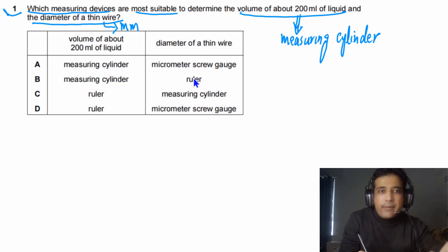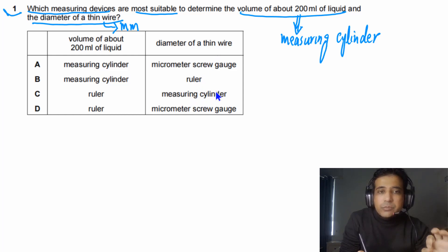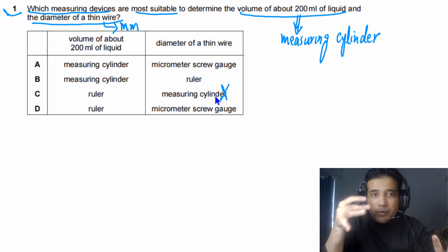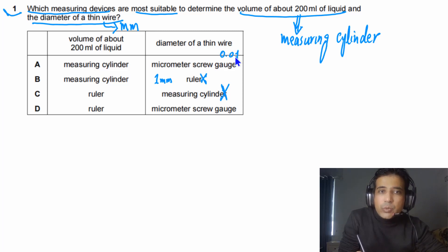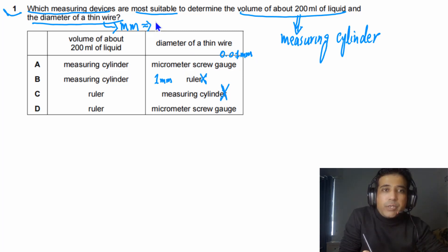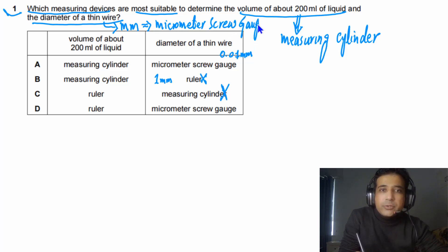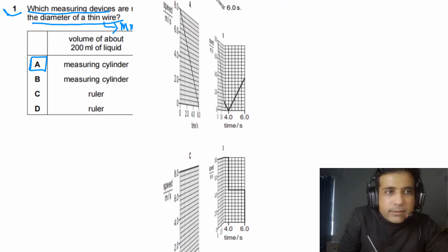For the diameter of a thin wire, which can be a few millimetres, we have three options: micrometer screw gauge, ruler, or measuring cylinder. A measuring cylinder cannot measure wire diameter. A metre rule is not precise enough — its precision is 1 mm. A micrometer screw gauge has a precision of 0.01 mm, so it is the best option. The answer for Question 1 is A.